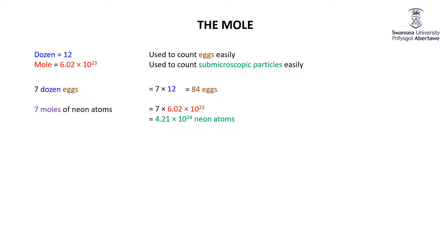Seven dozen eggs — that's 7 times 12, so 7 dozen is 84 eggs. Seven moles of neon atoms — well, a mole is 6.02×10²³, so that's 7 times 6.02×10²³, which is 4.21×10²⁴ neon atoms. One of the reasons why a mole is so wonderful is it doesn't matter what we're talking about: a mole is a mole is a mole. So seven moles of neon atoms is 4.21×10²⁴ neon atoms, and seven moles of water molecules would be 4.21×10²⁴ water molecules.